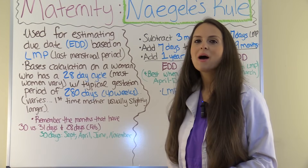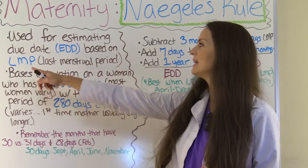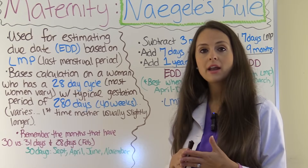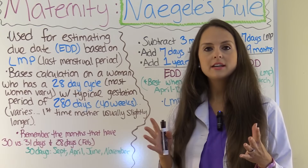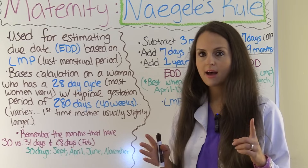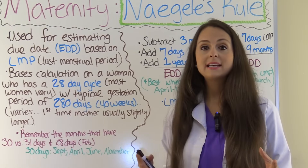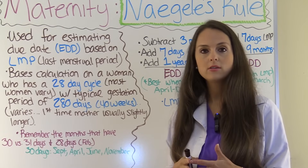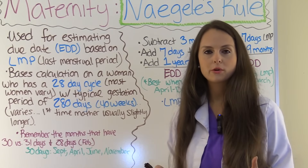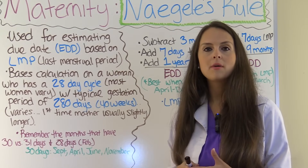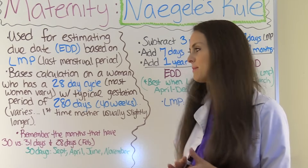Let's start out talking about what Nagel's Rule is. Nagel's Rule is a calculation used for estimating the due date of a baby, and it's based on a woman's last menstrual period. This calculation is an estimation because it assumes the woman has a 28-day cycle — which many women vary on — and a typical gestation period of 280 days, which is 40 weeks. First-time mothers can often go over 40 weeks, so this number is just an estimation.